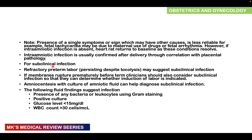For subclinical infections, there may be refractory preterm labor — where tocolytics are given but labor continues despite treatment. If membranes have ruptured prematurely before term, clinicians must maintain a high index of suspicion for subclinical infection and determine whether to induce labor, because the longer the child remains in an infected environment, the higher the risk of complications. Amniocentesis with culture of amniotic fluid can help diagnose subclinical infection. Suggestive findings include: presence of bacteria on gram stain, leukocytes, positive culture, glucose levels less than 15 mg/dL, or white cell count greater than 30 cells per microliter.